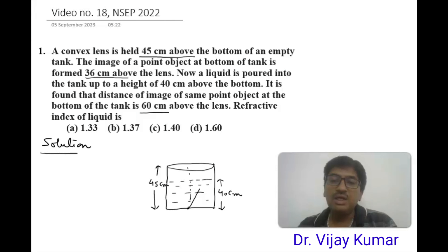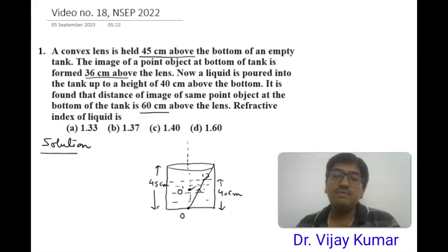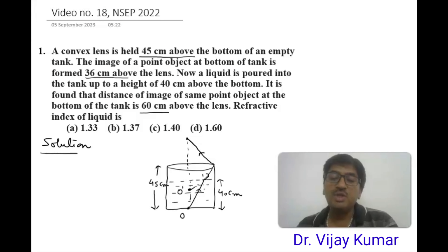When light rays are incident from the object, they propagate from a denser to a rarer medium, so the image deviates and is seen at point O-dash. This is object O, and due to the presence of the liquid, the image will be seen at point O-dash. After passing through the convex lens, the ray converges at a point 60 centimeters above the lens, as given in the question.